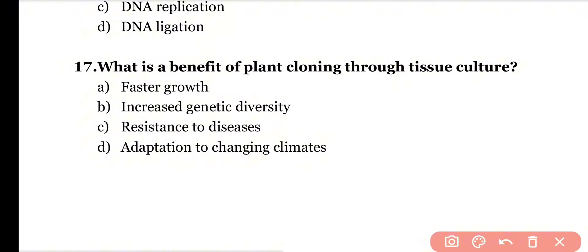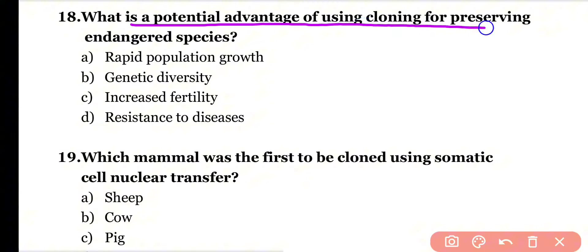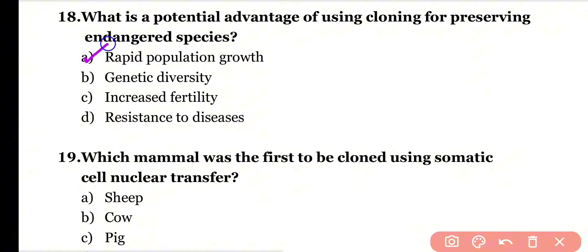Question number eighteen: What is the potential advantage of using cloning for preserving endangered species? Options: rapid population growth, genetic diversity, increased fertility, resistance to diseases. Correct answer is option A. When cloning is used to preserve endangered species, the population of those endangered species increases, resulting in rapid population growth.